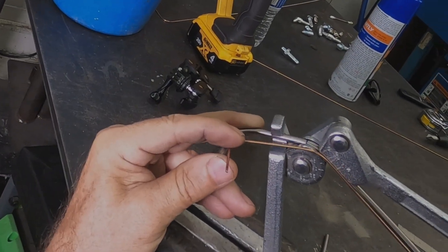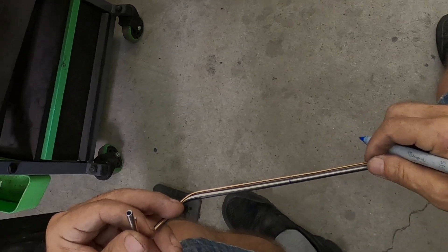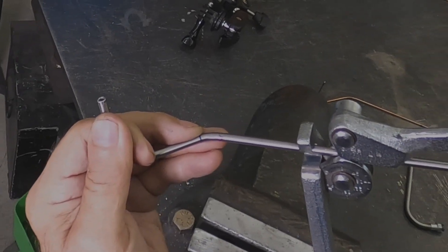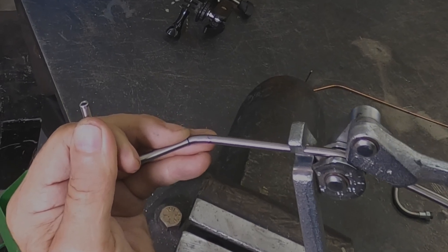I only use AN or JIC double flare connections. Bubble flare and reverse flare connections might be more robust but they are not as common or adaptable.